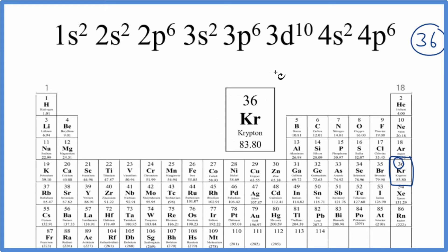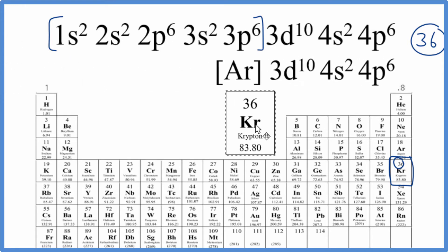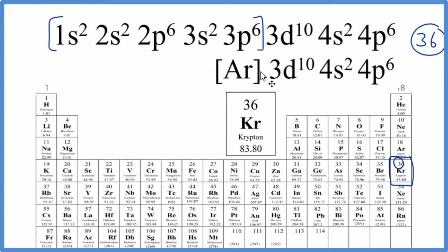We could also write this in abbreviated notation. Right now it's in long form electron configuration. We find the noble gas before krypton, that's argon with 18 electrons. We can write [Ar] for all of this, ending up with this condensed notation for krypton. Same thing, we've just condensed all of this down to [Ar].